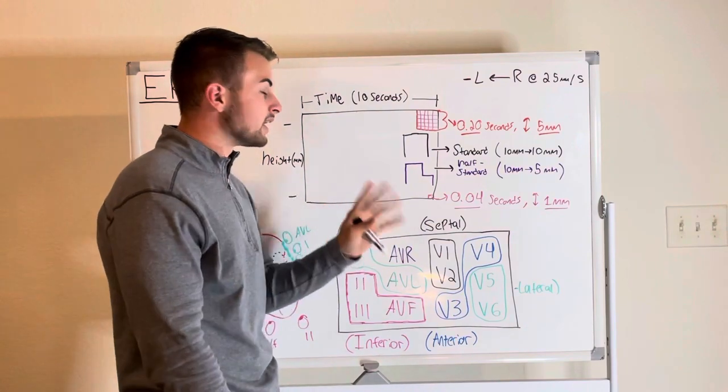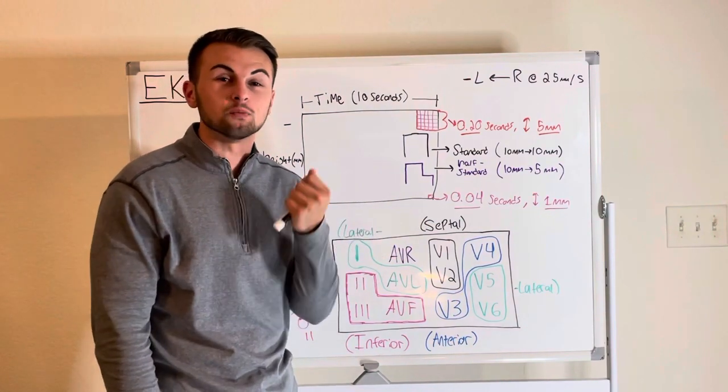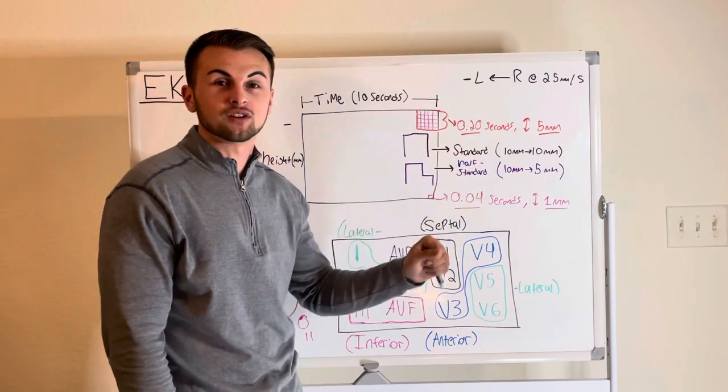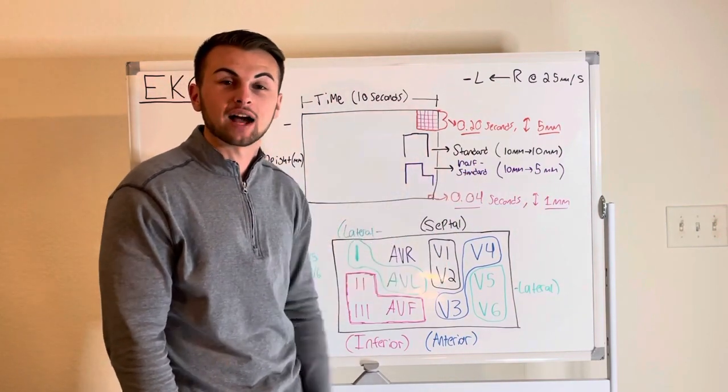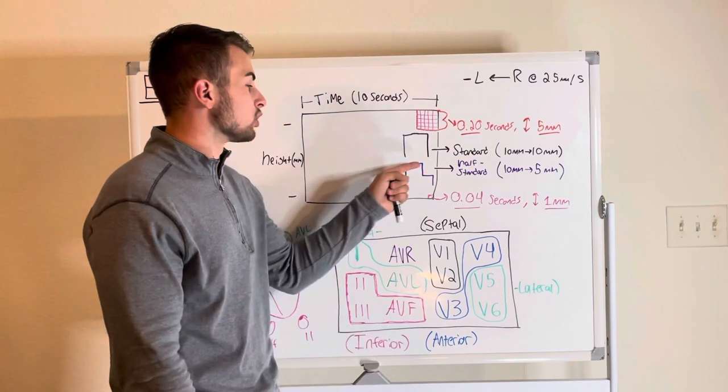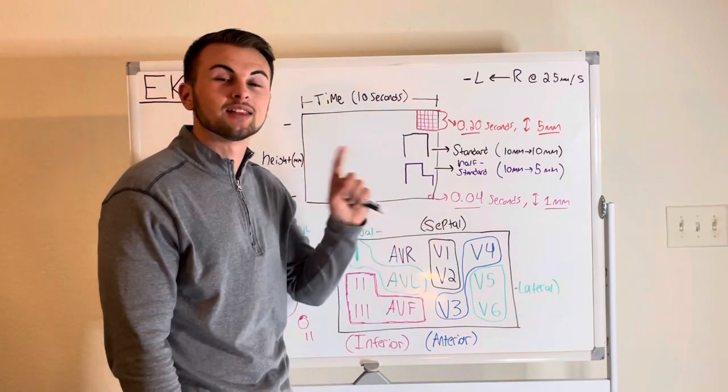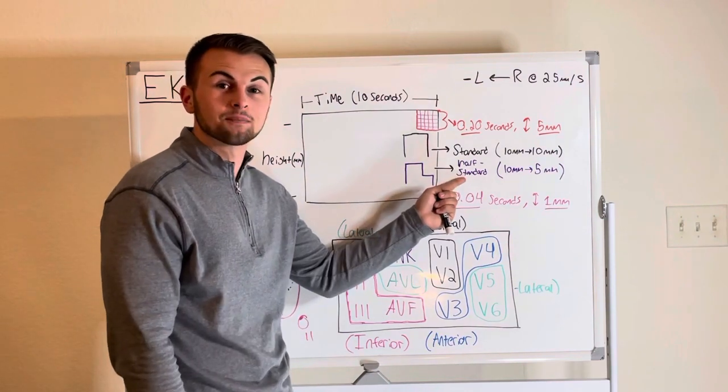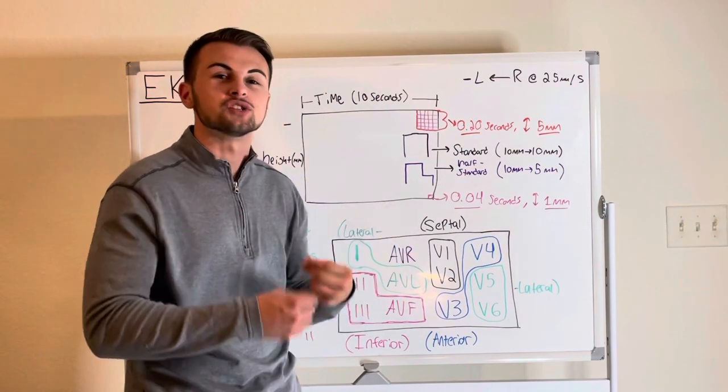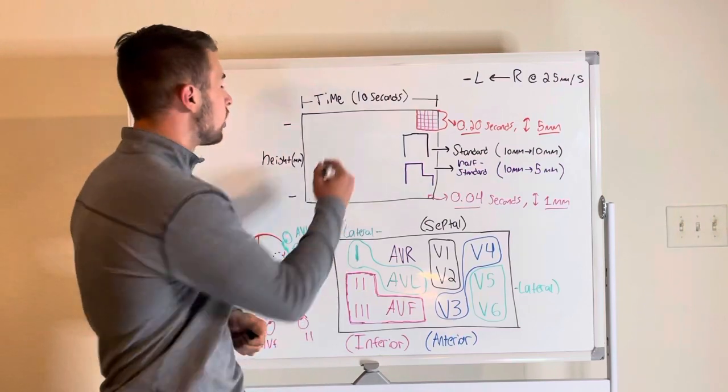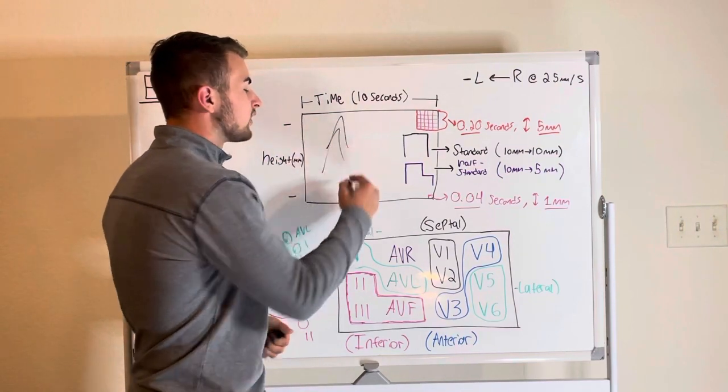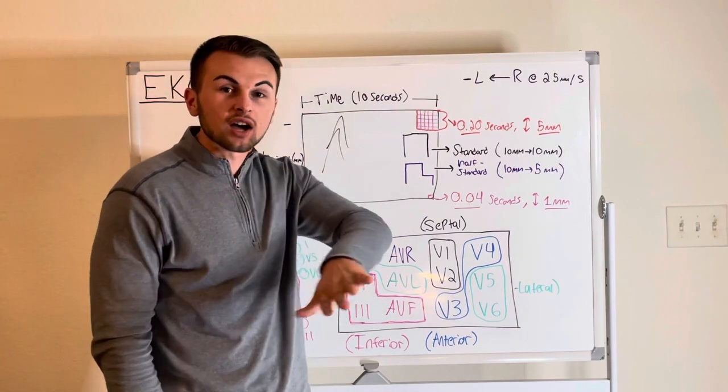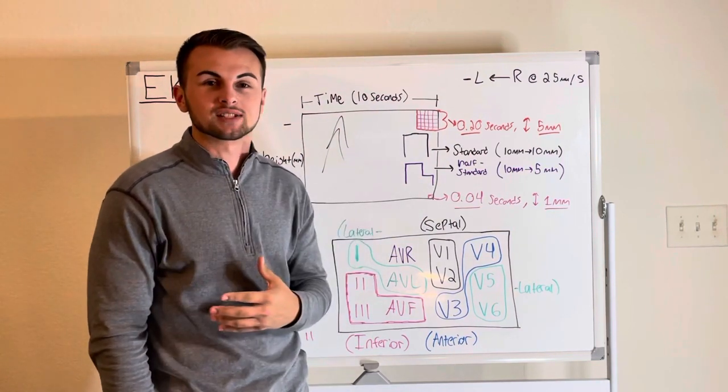Now we need to know that it can be very easy to misinterpret an EKG if it is set to half standard calibration. This box will look like a little stair step and the important thing to remember about EKGs set in half standard is that this calibration is used when the complexes are so tall that they're actually starting to run into each other. This half calibration stunts the height of the complexes.